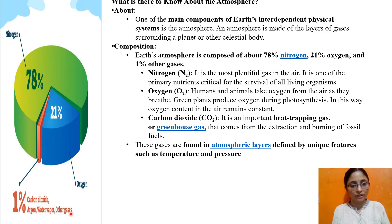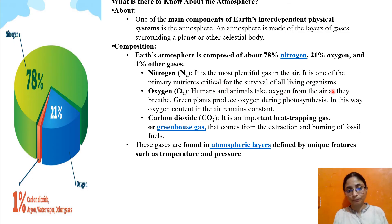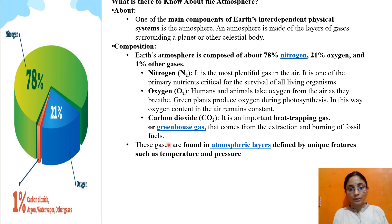The atmosphere is very important for our interdependent physical system because humans and animals take oxygen from the air as they breathe, and green plants produce oxygen during photosynthesis — in this way, oxygen content in air remains constant. Nitrogen is also a very plentiful gas and is one of the primary nutrients critical for the survival of all living organisms. Carbon dioxide is an important heat-trapping greenhouse gas, and it comes from burning fossil fuels and extraction processes.